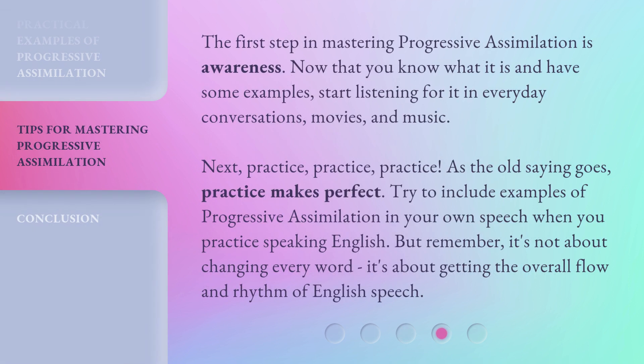The first step in mastering progressive assimilation is awareness. Now that you know what it is and have some examples, start listening for it in everyday conversations, movies, and music. Next, practice, practice, practice. As the old saying goes, practice makes perfect. Try to include examples of progressive assimilation in your own speech when you practice speaking English. But remember, it's not about changing every word — it's about getting the overall flow and rhythm of English speech.